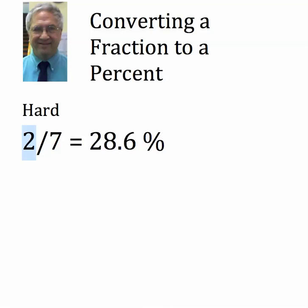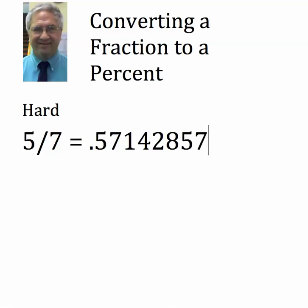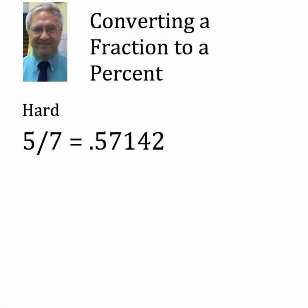Let's take another one with sevenths. I happen to love sevenths. Let's go with five-sevenths. You can use your calculator or do long division, and you'll get five-sevenths is equal to 0.571428 repeating. I promise you — Boy Scout's honor — I am not using a calculator. That's a repeating decimal, so if you did it out on a calculator you'd find it repeating: 57, 14, 28 again.